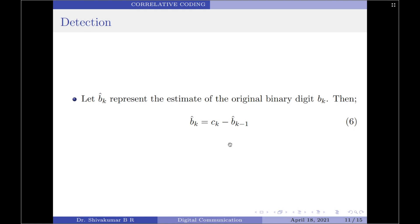One of the biggest disadvantages of this detection process is that once errors are made, they tend to propagate. This is because the decision for the current binary digit Bk-hat depends on the correctness of the previous decision B(k−1)-hat. If the previous decision itself is in error, then the chances of the current decision also becoming an error are very high. Therefore, the duobinary conversion filter suffers from chaining of errors.